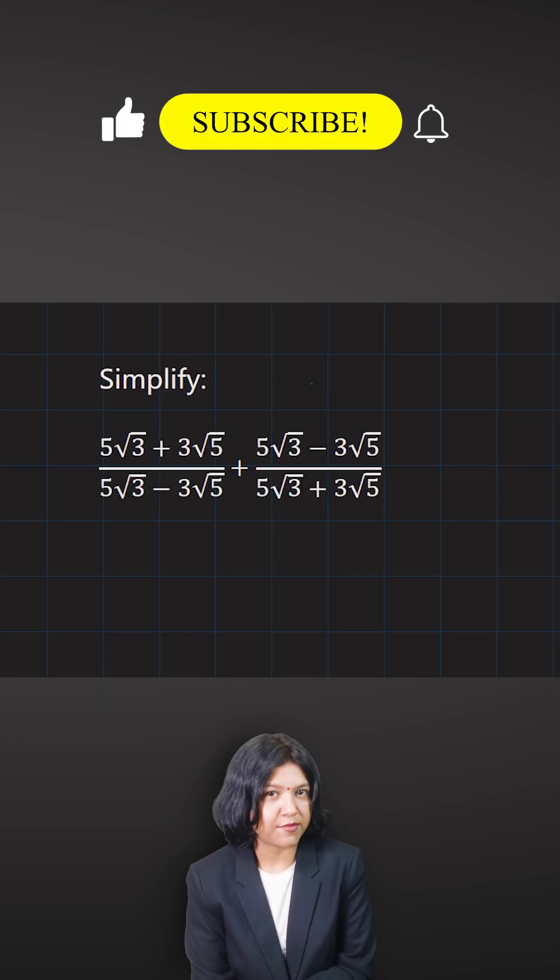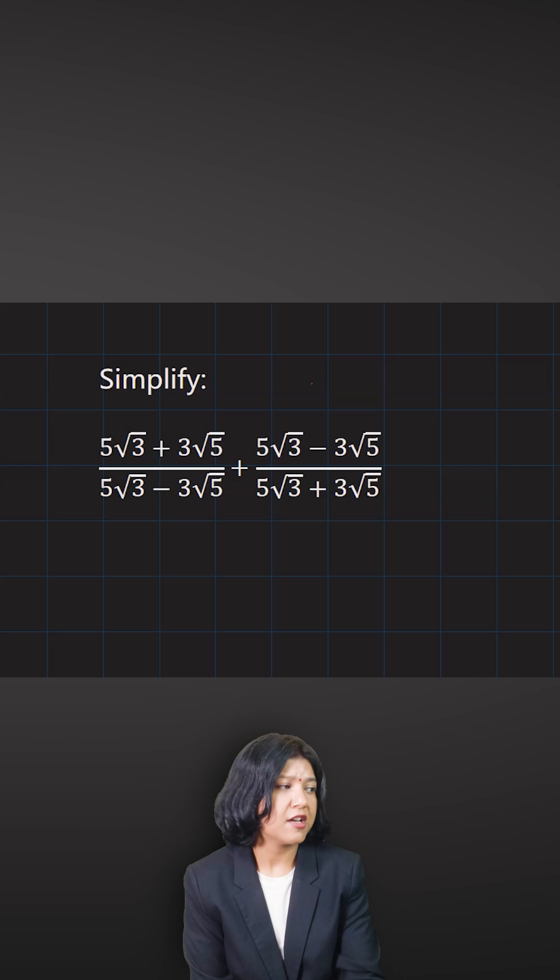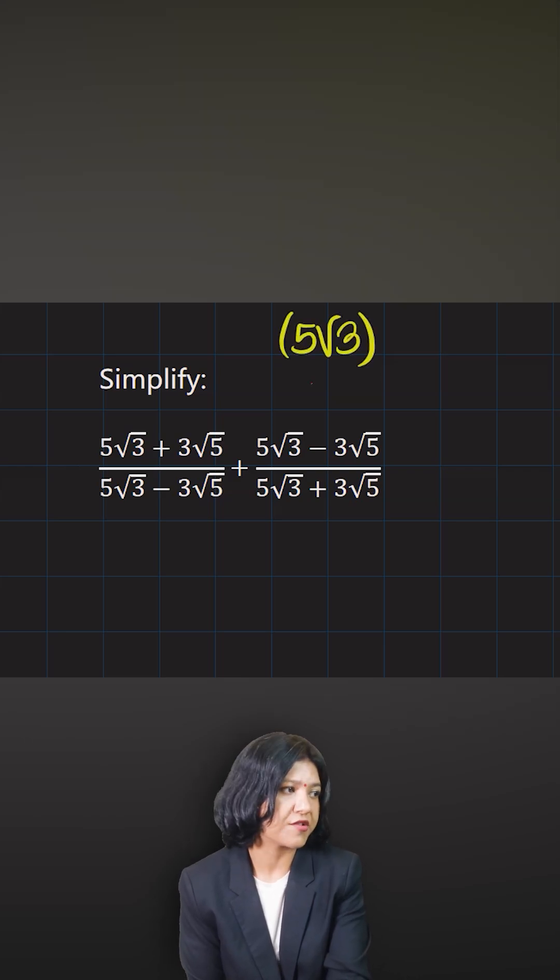First of all, because all the numbers are same—5√3, 3√5, everything is the same—you do one thing: just find out the square of the two values you have. Square of 5 is 25 and √3 squared gives you 3. So 3 times 25, the answer is 75.